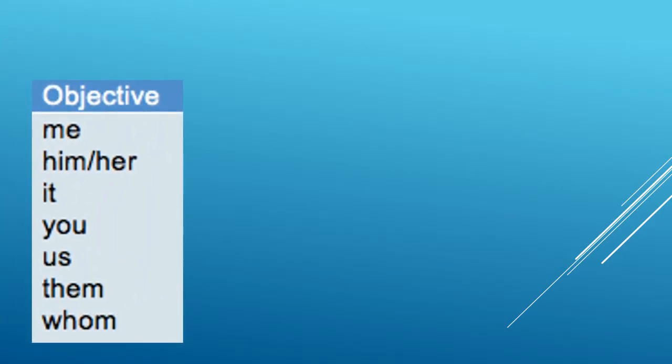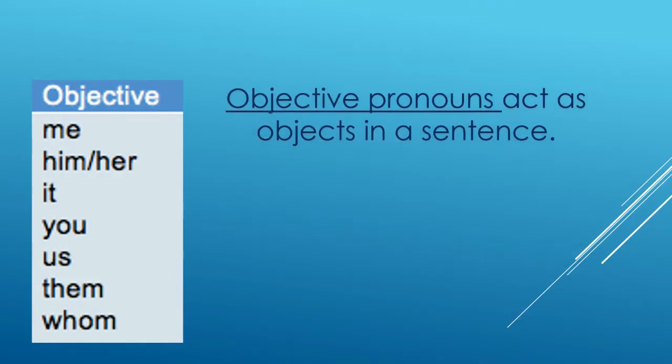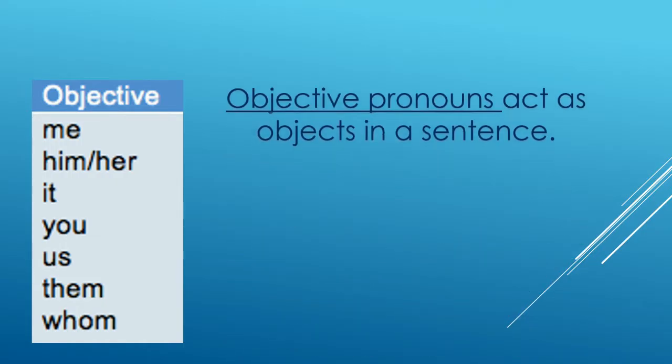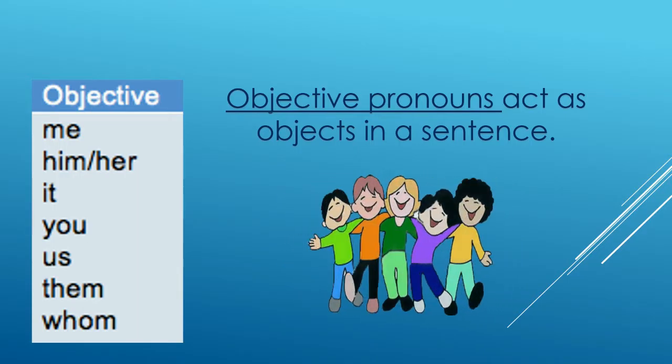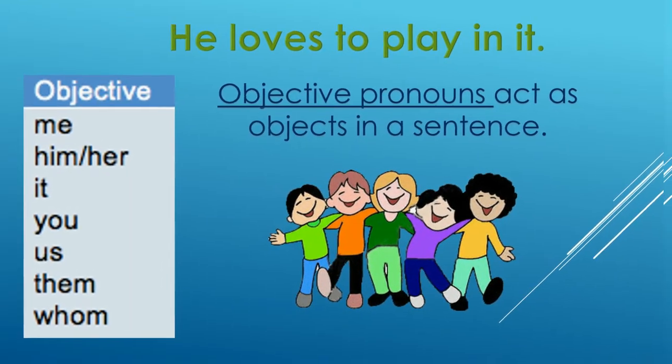Objective pronouns act as the objects in the sentence. In this example, we have, he liked to play in it. We replaced lake with it. It is our pronoun.